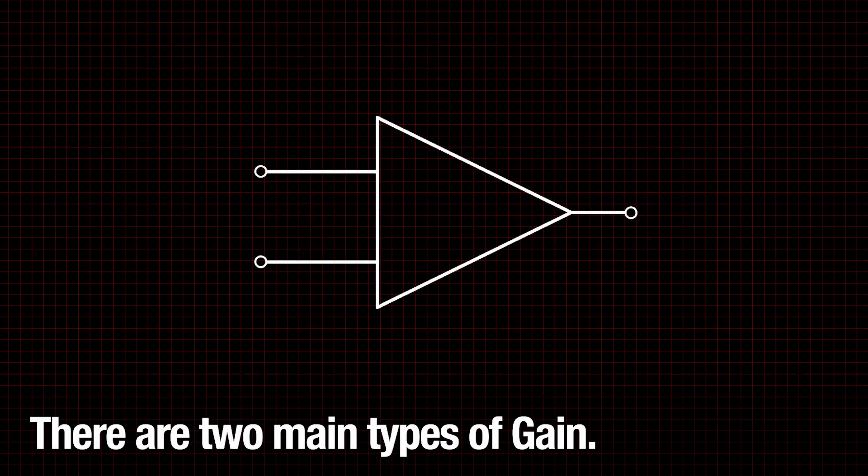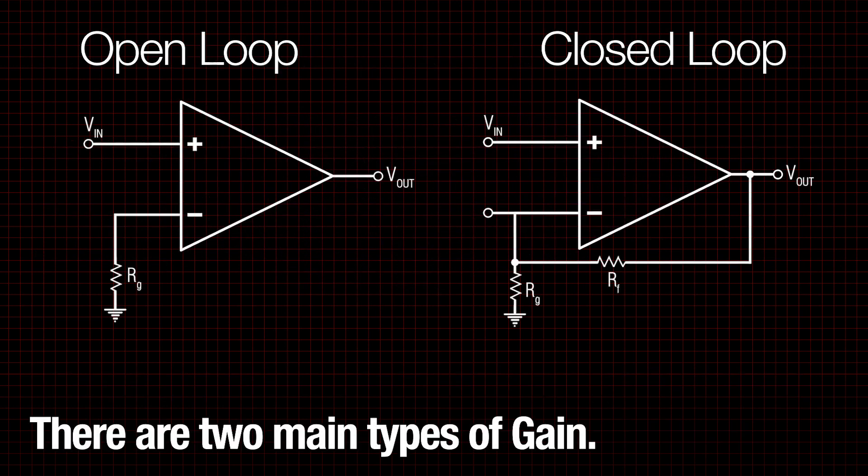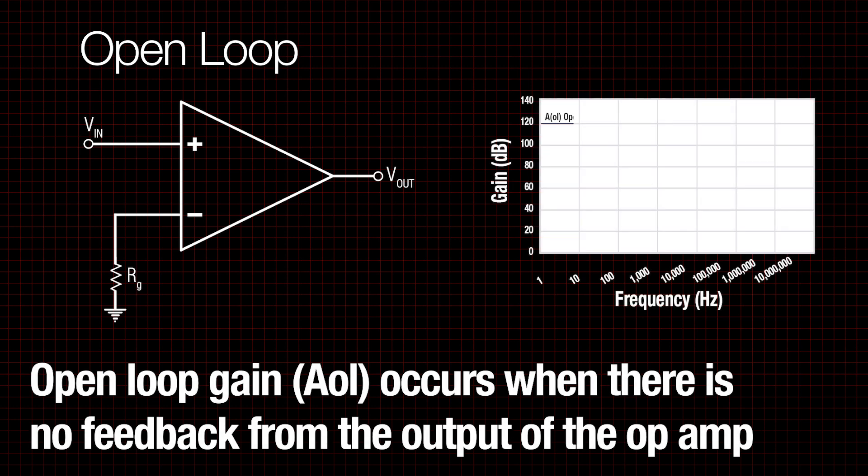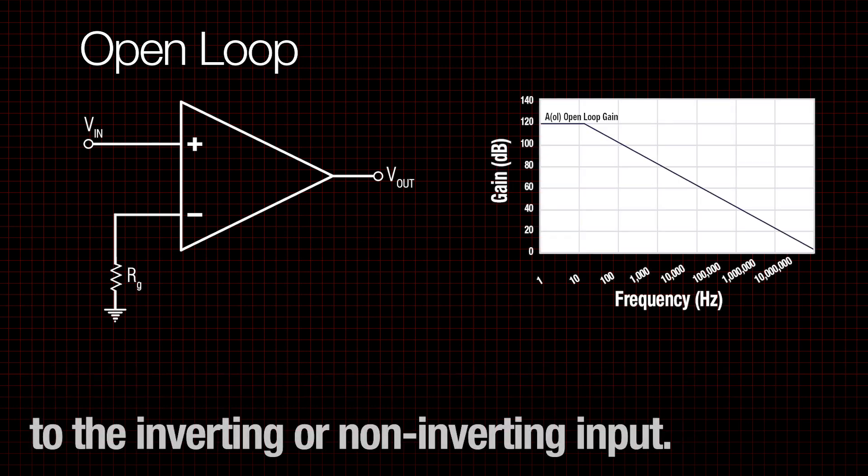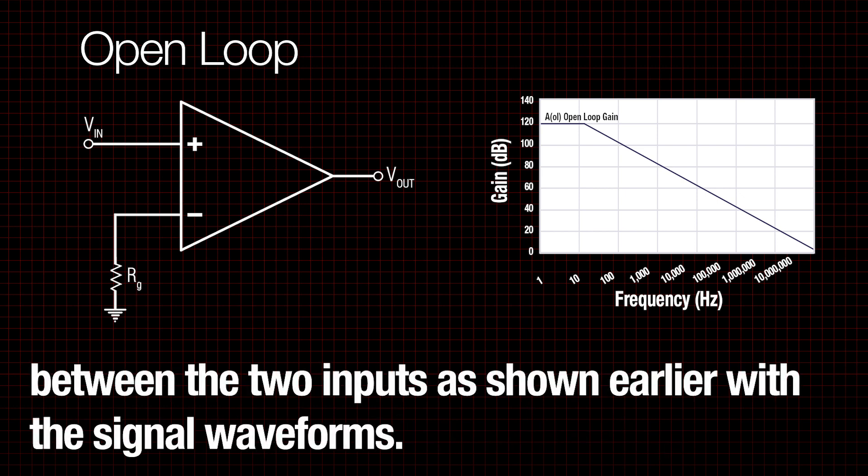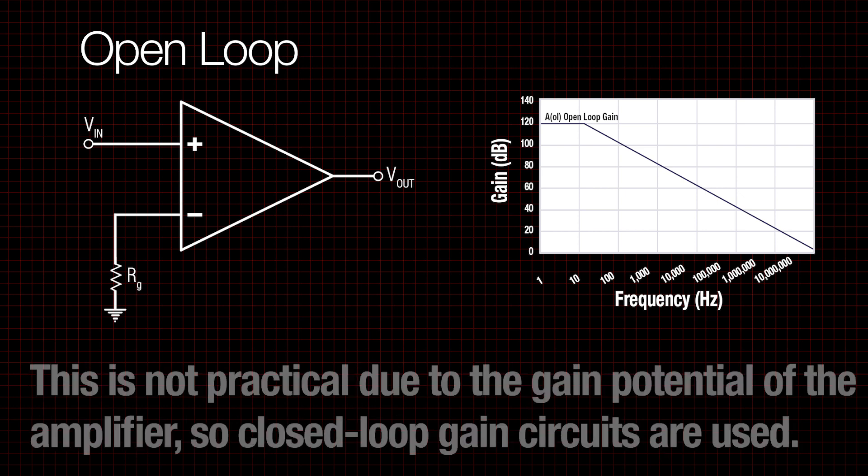There are two main types of gain: open loop and closed loop. Open loop gain occurs when there is no feedback from the output of the op-amp to the inverting or non-inverting input. This gain is simply the op-amp's overall gain, determined by the difference in voltage between the two inputs as shown earlier with the signal waveforms.